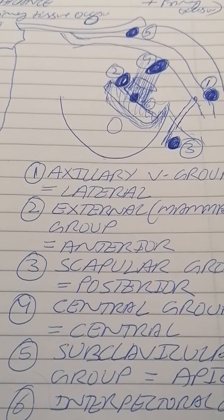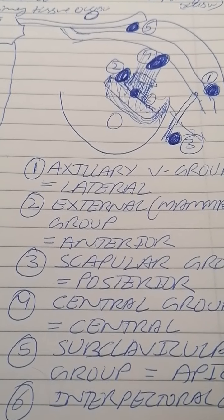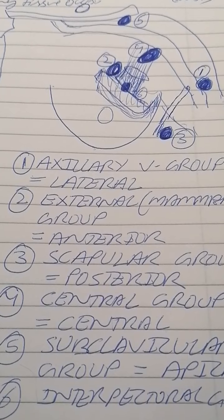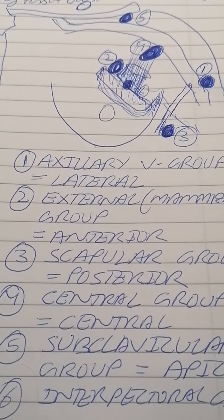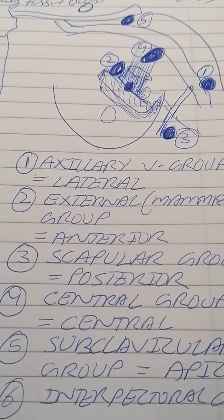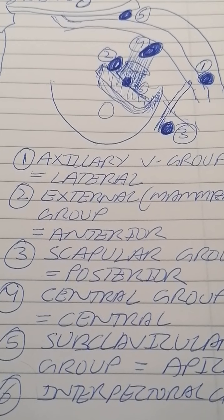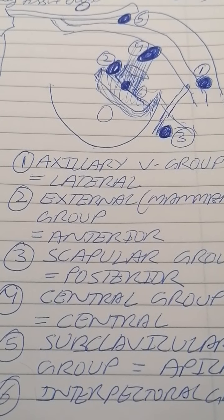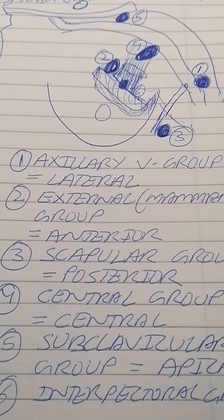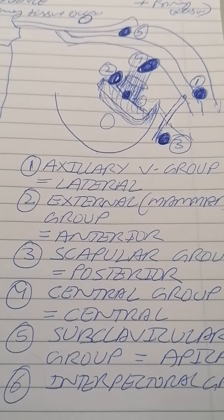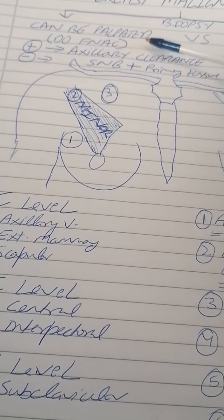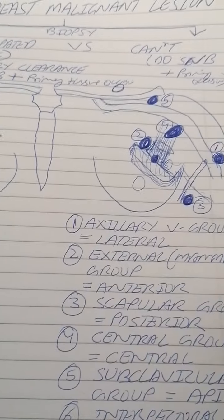If we cannot palpate any axillary lymph node, we skip the fine needle biopsy entirely and go straight to sentinel lymph node biopsy. There is no use doing FNAC if we can't palpate anything. The goal is to determine whether metastasis has occurred in the lymph nodes. We inject the dye, biopsy the first lymph node, and remove the primary tumor. The key decision point is: palpable node or not.